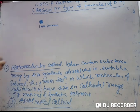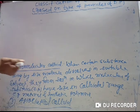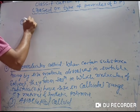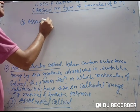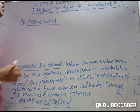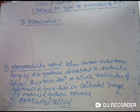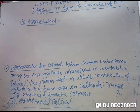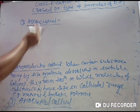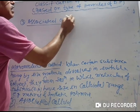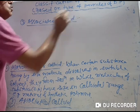The third type is associated colloids. There are certain substances which behave as a normal electrolyte at low concentration, but at high concentration they behave like a colloid. At low concentration their solutions are true solutions, but at high concentration their solutions will be colloidal solutions. Such colloids are known as associated colloids.